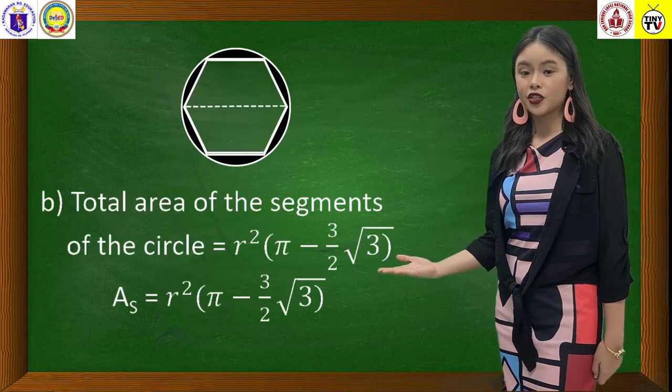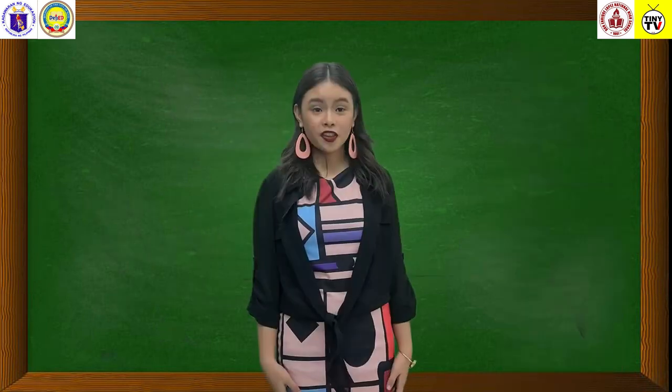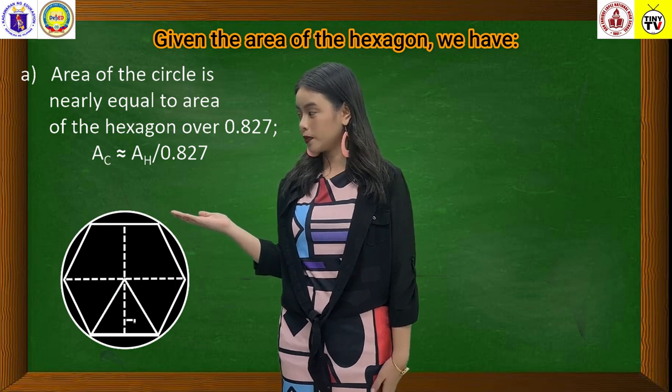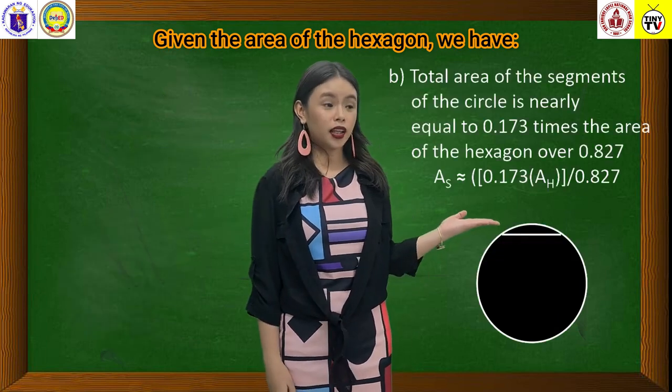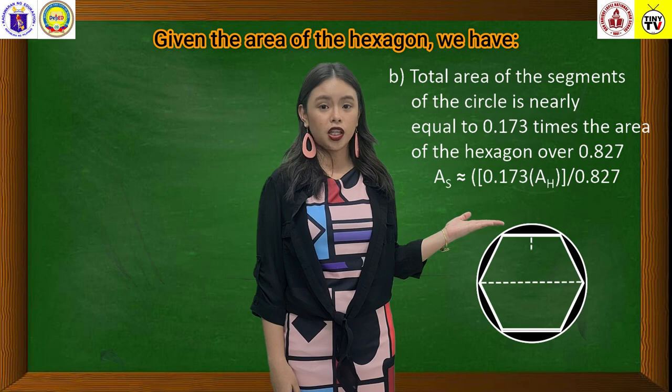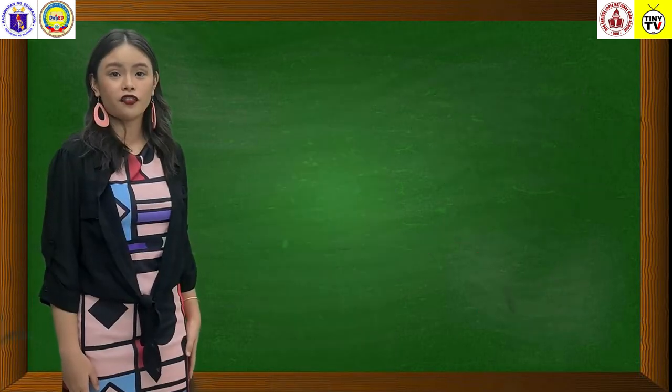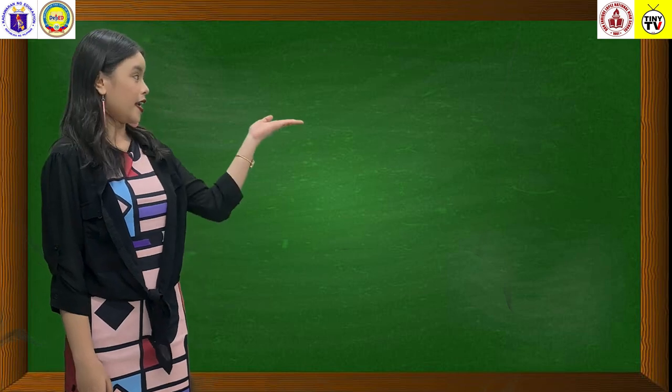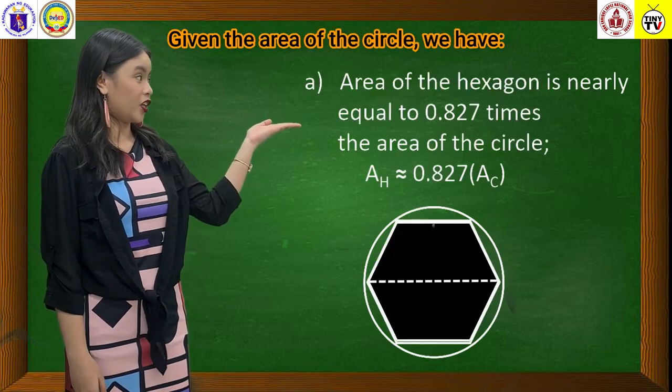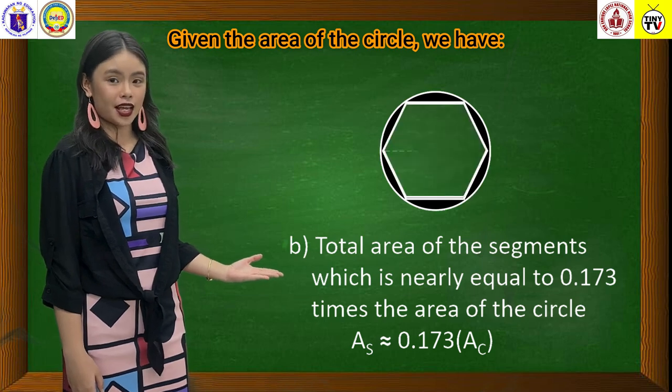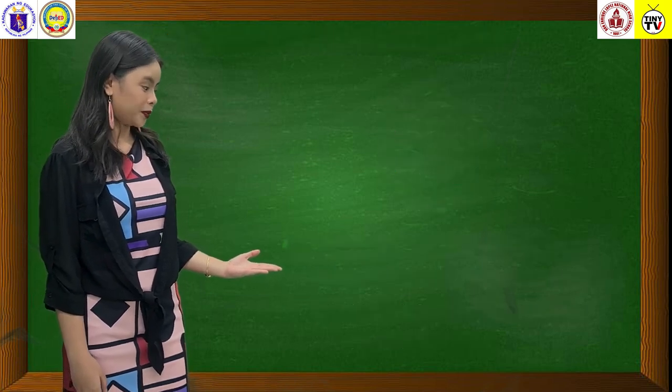Total area of the segments of the circle is equal to... Given the area of the hexagon, we have A. Area of the circle is nearly equal to... And B. Total area of the segments of the circle is nearly equal to... Given the area of the circle, we have A. Area of the hexagon is nearly equal to... And B. Total area of the segments which is nearly equal to...